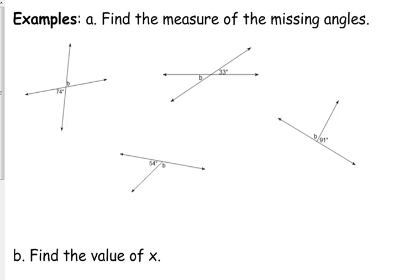Let's look at the first one on the left. 74 degrees is labeled and the upper part is labeled B. We need to identify the relationship — they're vertical, so they have the same measure. B is also 74 degrees. Let me label these one, two, three, four. Number two: the relationship is also vertical, so B in this case is 33 degrees. Three and four are both linear pairs.